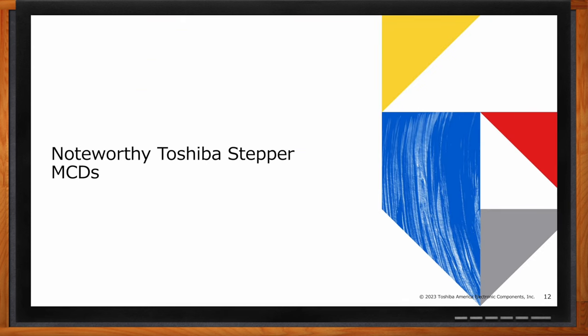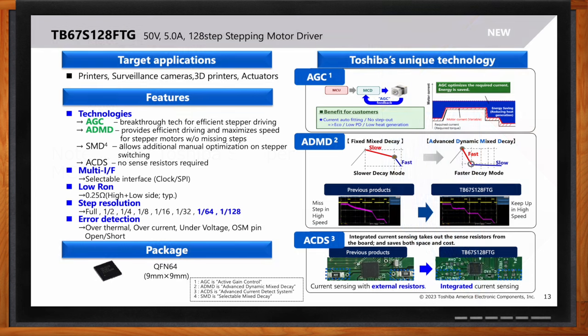Okay. First, I'd like to introduce our TB67S128. This is one of our most highly integrated and popular parts. It incorporates all the bells and whistles that we have discussed so far. The AGC, the ADMD for optimum performance, as well as the ACDS for BOM reduction. It also has a fairly high current capability of 5 amps and offers up to 1 over 128 step resolution. So, this is a very popular part we have with our customers.